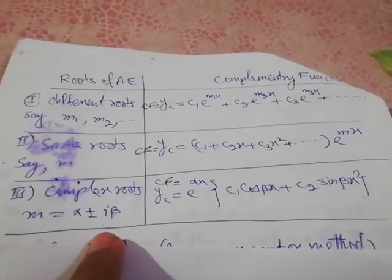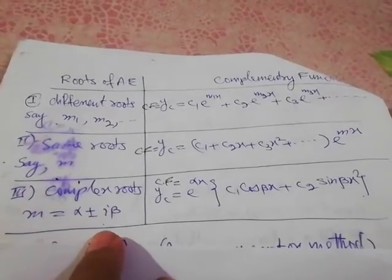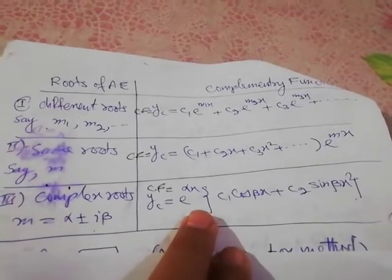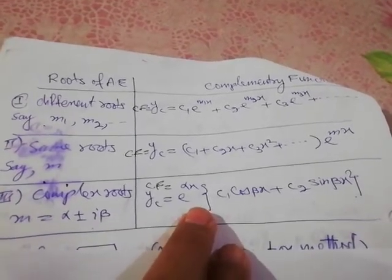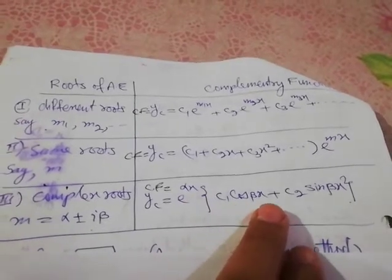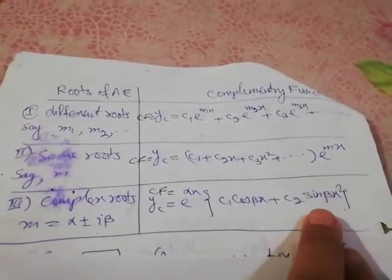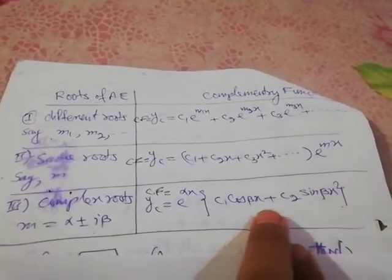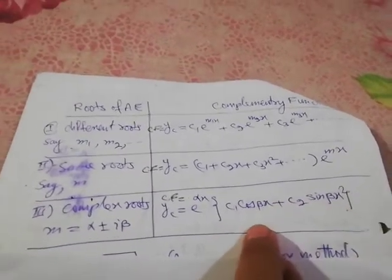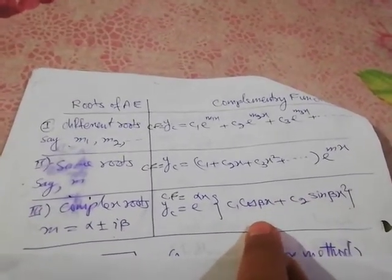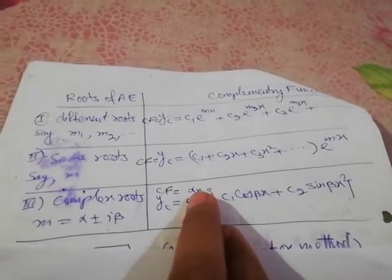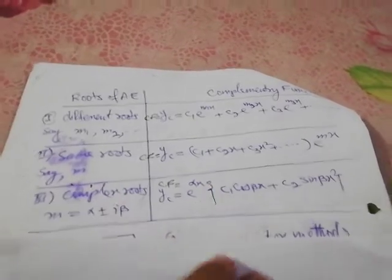For complex roots of the form alpha plus or minus iota beta, the complementary function solution is e^(αx) times (c₁cos(βx) + c₂sin(βx)), where beta is the imaginary part appearing in the argument of cosine and sine, and alpha is the real part in the exponent.